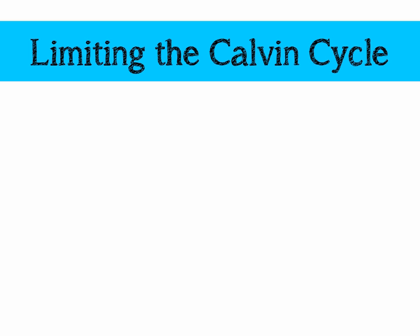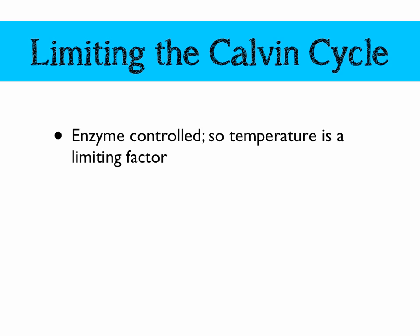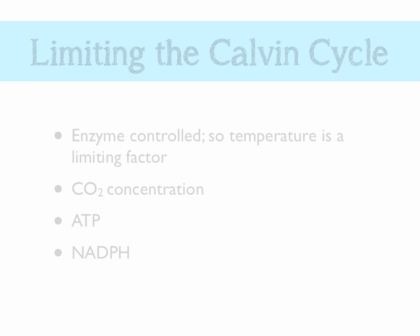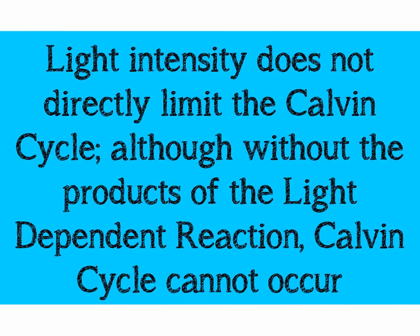What limits the Calvin cycle? As an enzyme-controlled process, temperature is a limiting factor — too low and particles lack kinetic energy; too high and the enzymes denature. Carbon dioxide concentration is also key: we need enough CO₂ for RuBP to be converted into G3P. We also need the products of the light-dependent reaction — ATP and NADPH — to convert G3P into triose phosphate. Light intensity doesn't directly limit the Calvin cycle, but without light, the light-dependent reaction can't produce the ATP and NADPH the cycle requires, so it could not occur.